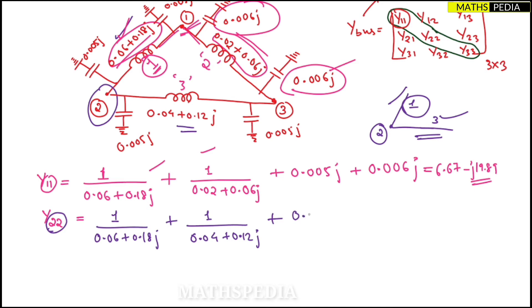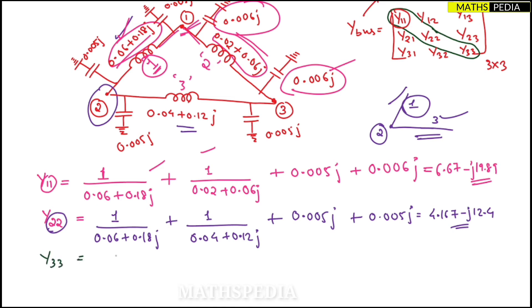Also add the half-line charging for line three only once. The total gives Y22 = 4.167 − j12.4 (approximately).